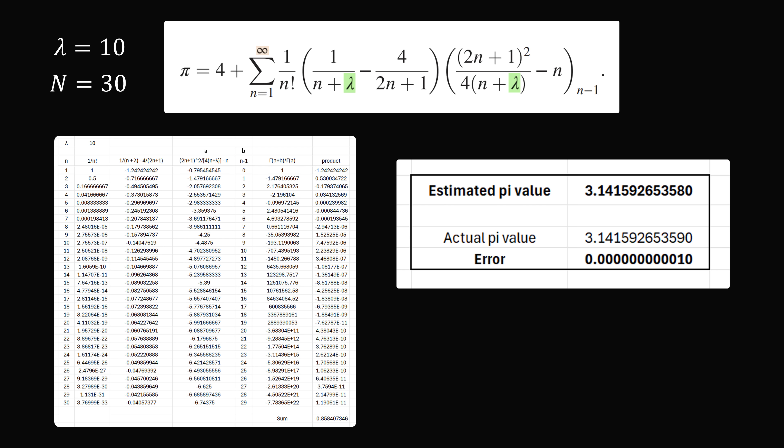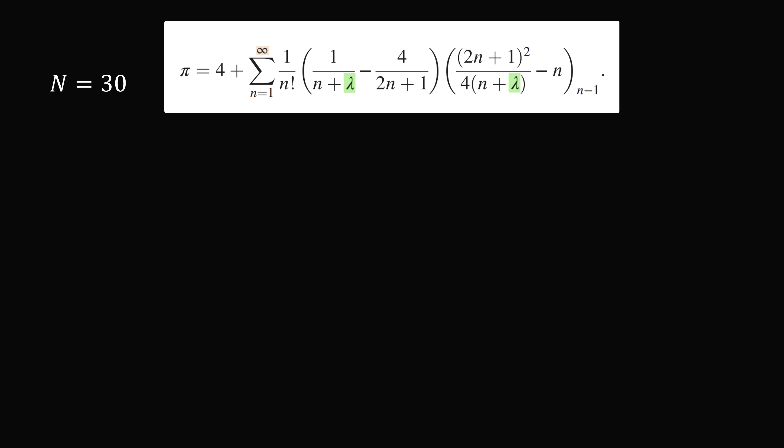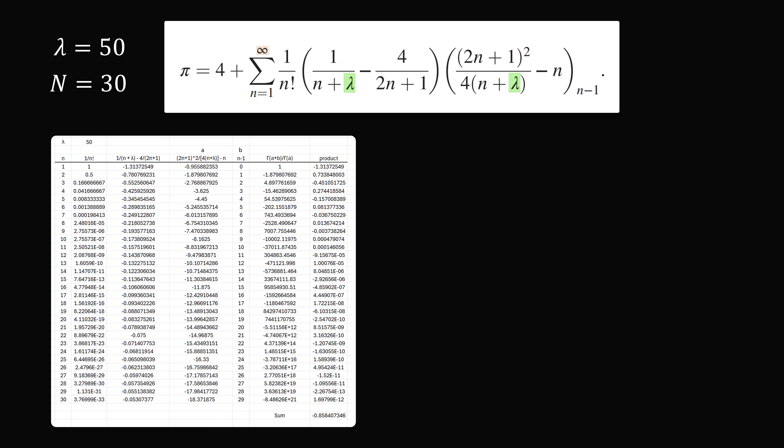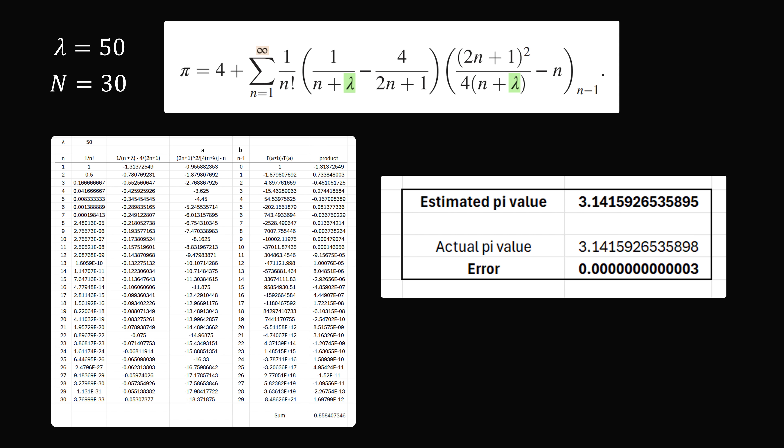But we're not done yet, we can vary the parameter lambda. If we put in lambda equal to 50, the same sort of calculation will get us one more digit of pi. So it just took a few terms to get pi this accurate.